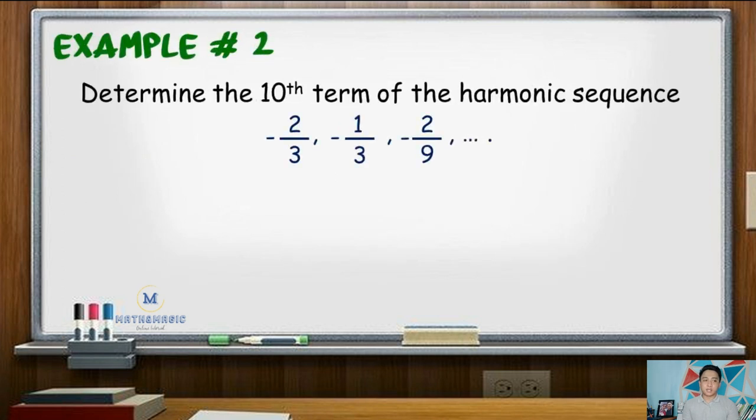For our second example, determine the 10th term of the harmonic sequence negative 2 third, negative 1 third, negative 2 over 9, and so on.